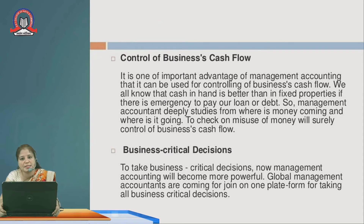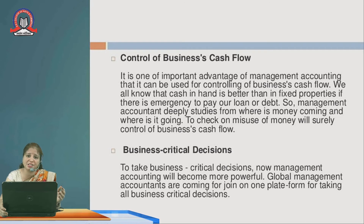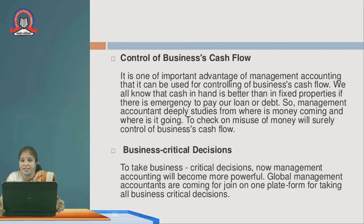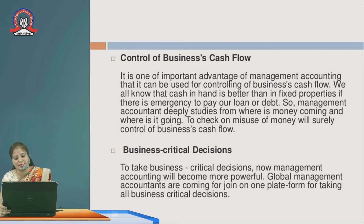It controls the business cash flow — helping to understand where cash is coming in, where it is going, what emergency loans need to be paid immediately, and checking for misuse of money. Critical business decisions can be taken with the help of management accounting. Global management accountants are coming together on one platform for taking all business decisions.